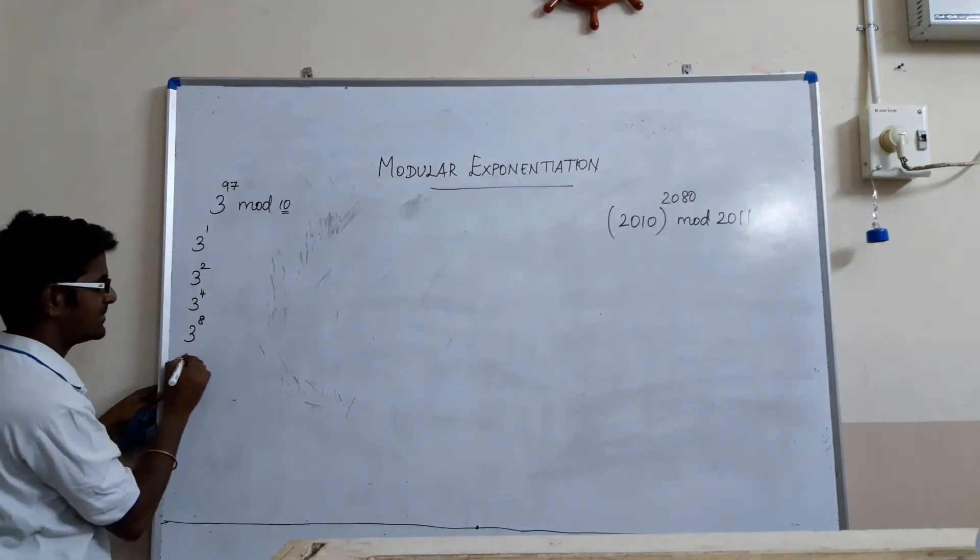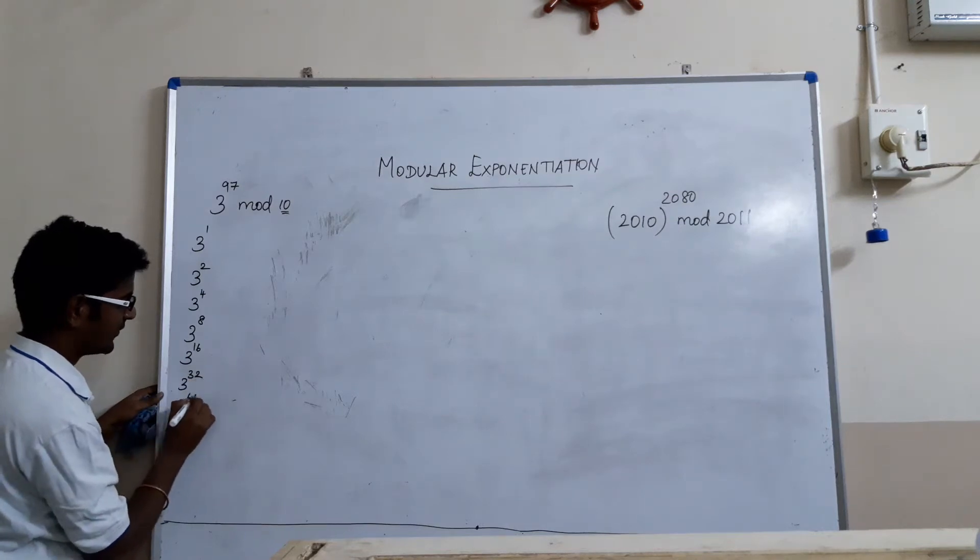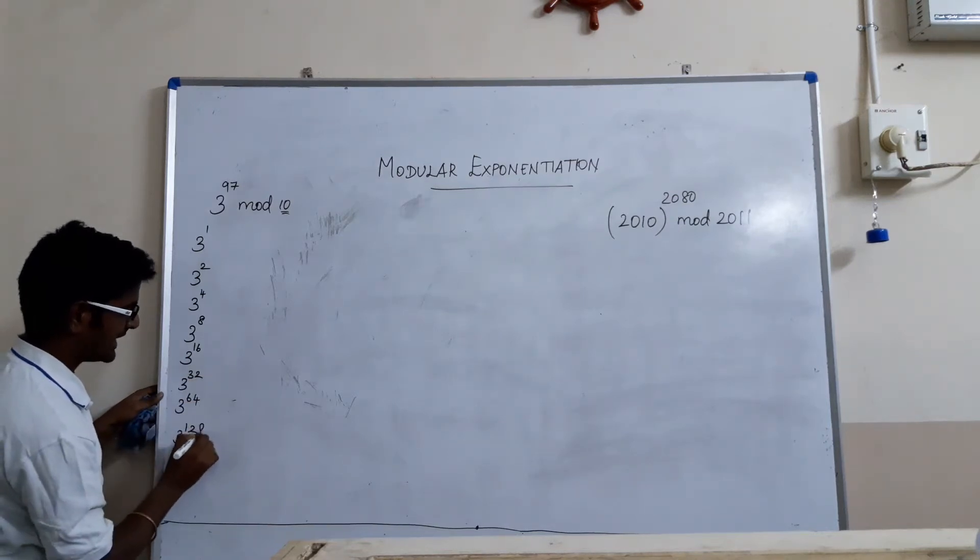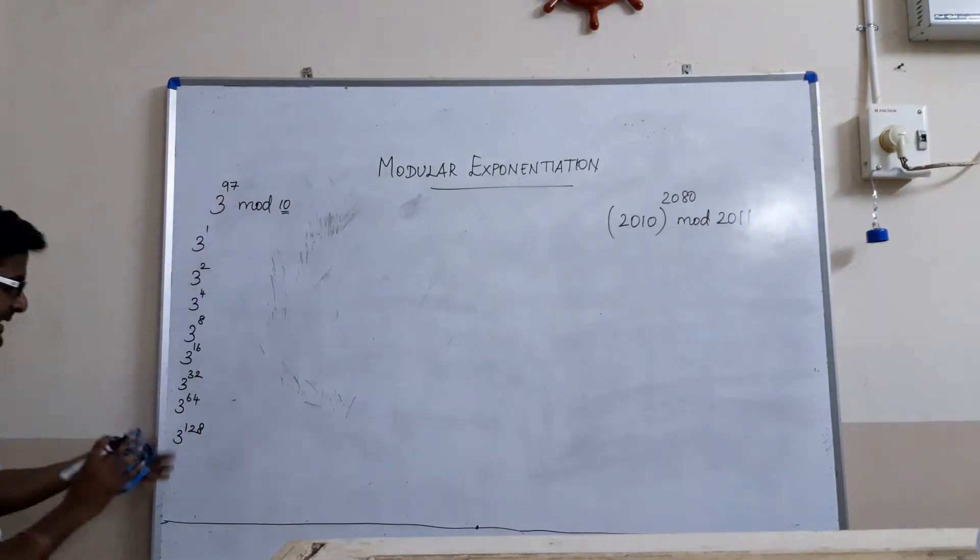We are just doubling every time: 3 power 16, 3 power 32, 3 power 64, 3 power 128. We need not calculate 3 power 128. Why? Because we need only 3 power 97.